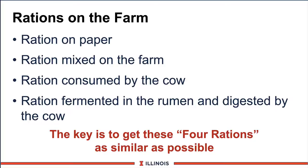Finally, the fourth ration, which is a relatively new ration, is that ration that is fermented in the rumen and the digestive tract, so we get the key nutrients to the key organ — in this case the mammary gland — to produce the amounts of milk components that we are trying to achieve. Therefore, the key in feeding systems is to try to get all four of these rations as similar as possible to meet the cow's requirements.